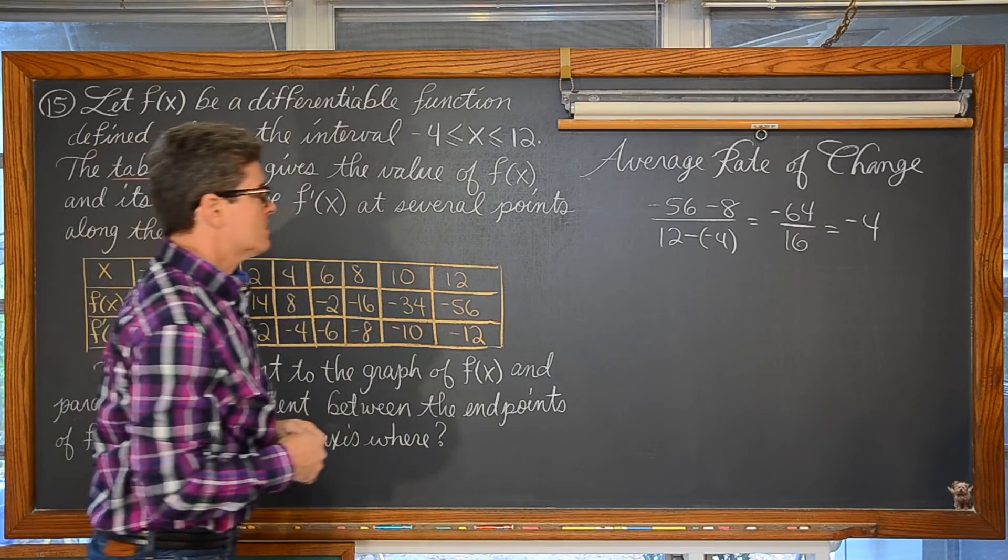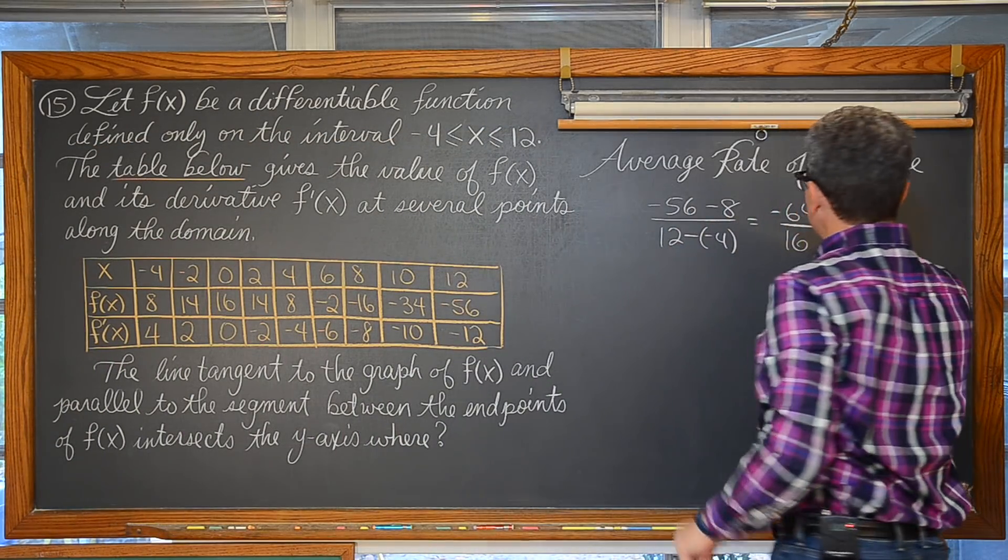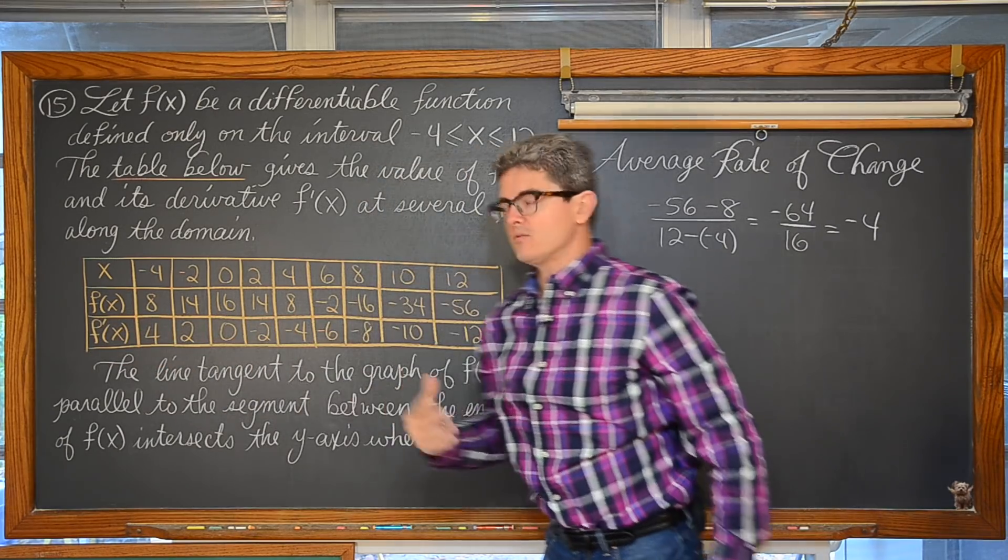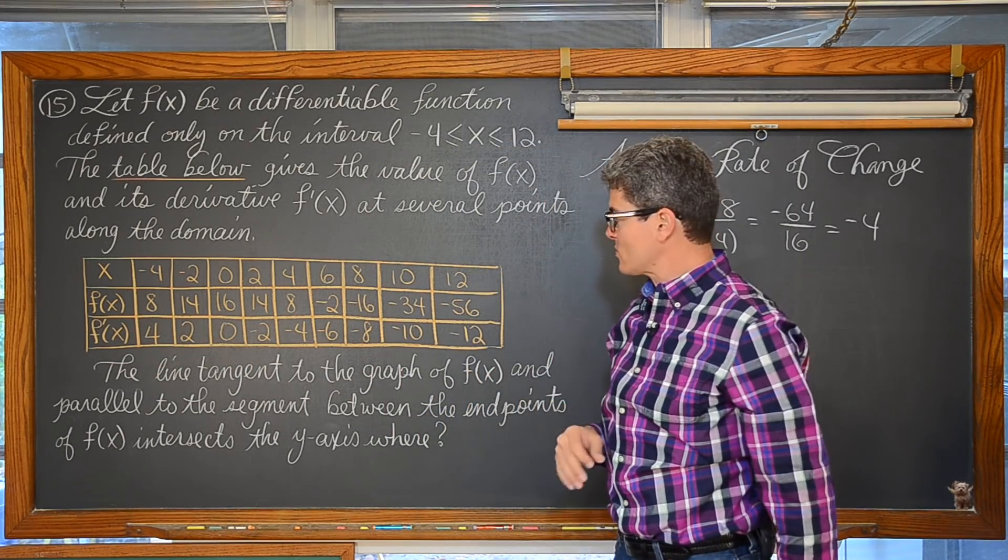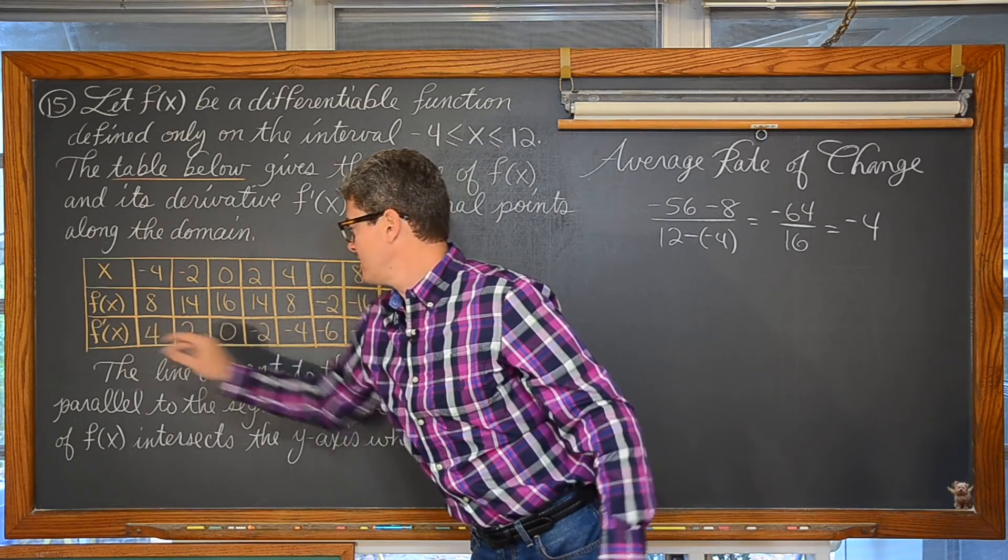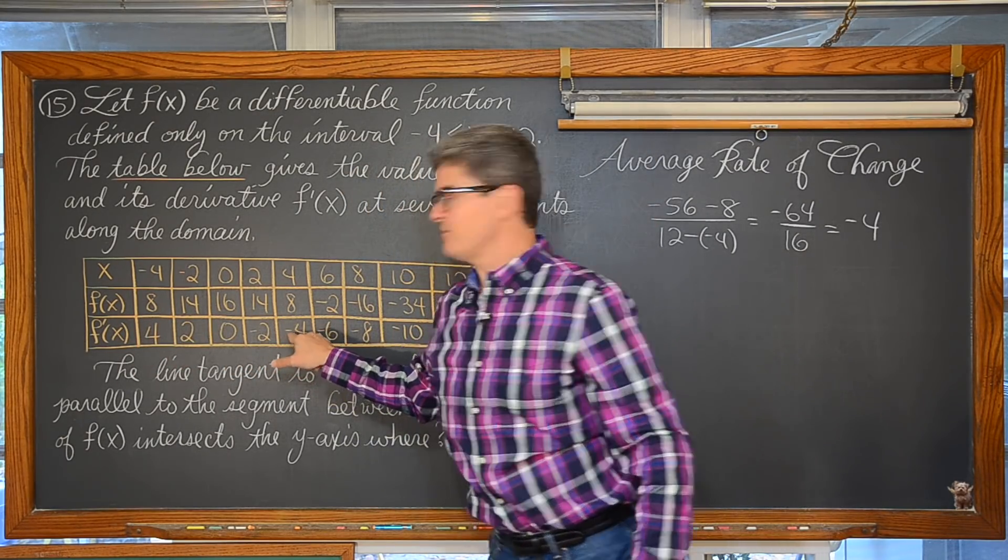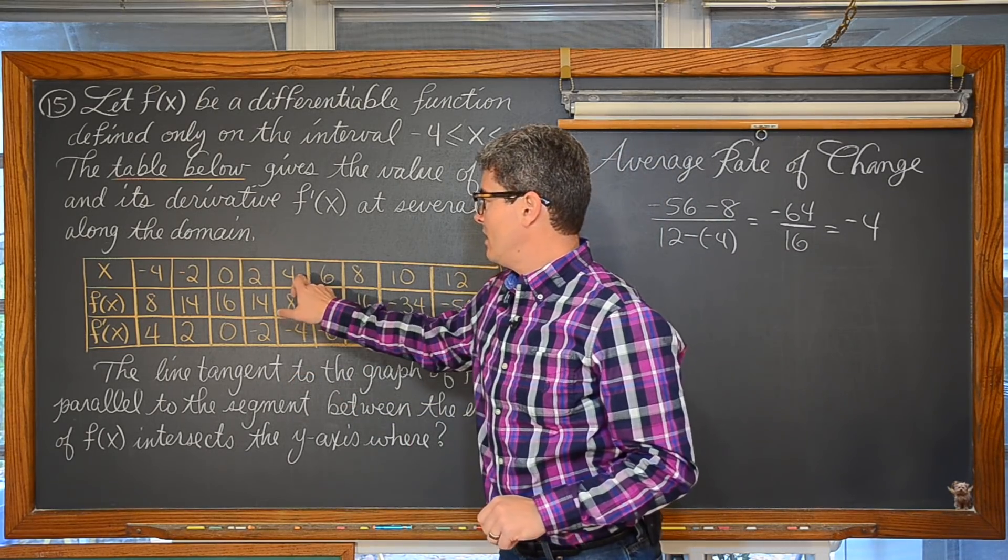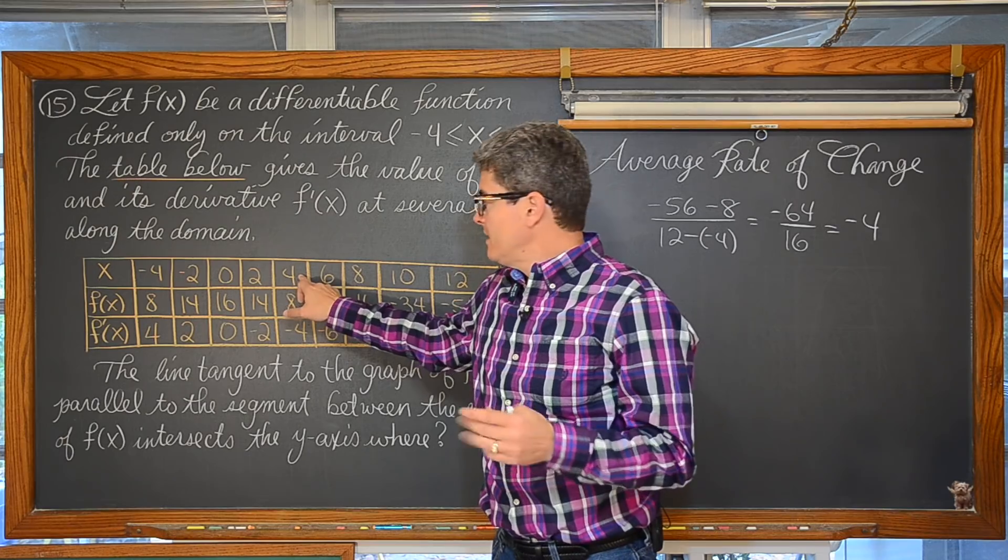So, let's see. The mean value theorem guarantees its existence. Our function is differentiable and therefore also continuous, differentiable on the open interval, continuous on the closed. Let's find that c. So our average rate of change is negative 4. Well look along here. We are given values for the derivative, that instantaneous rate of change, and voila! We have an instantaneous rate of change of negative 4, like our average rate of change, at the x value of 4.